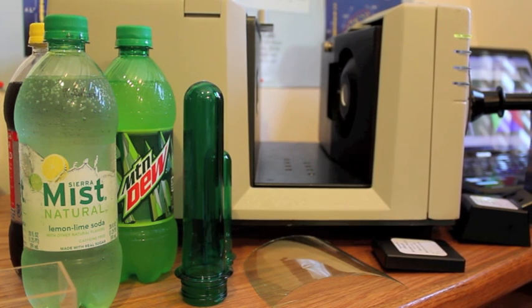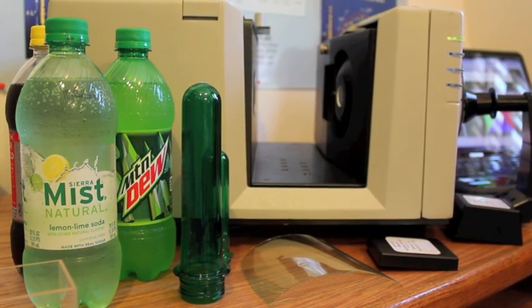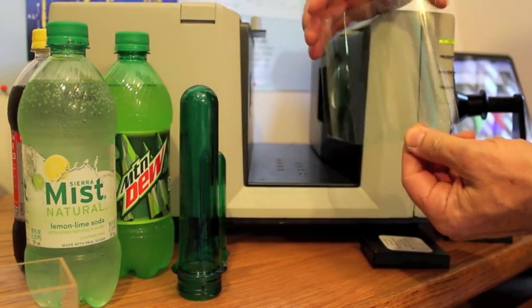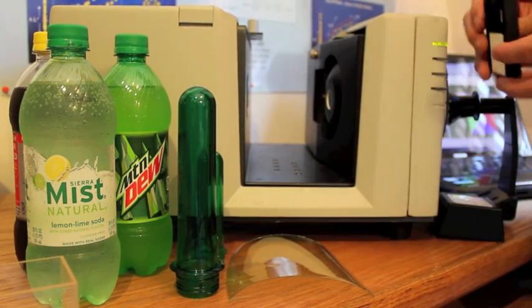Once we've finished measuring the preform, the bottle's blown into a finished product. And here we have a sample cutout from the bottle, and we want to measure both color and haze. First, we use the white tile.